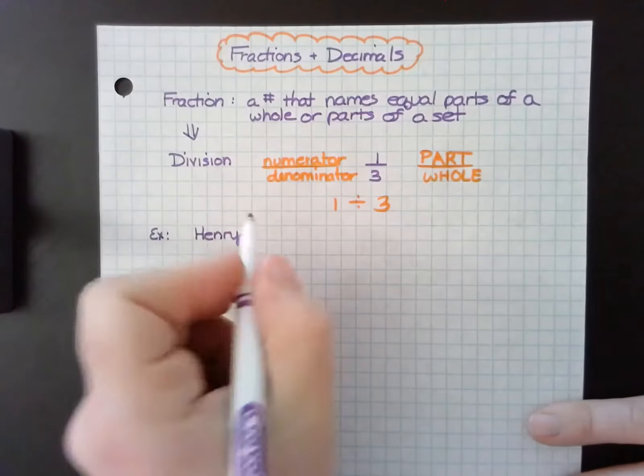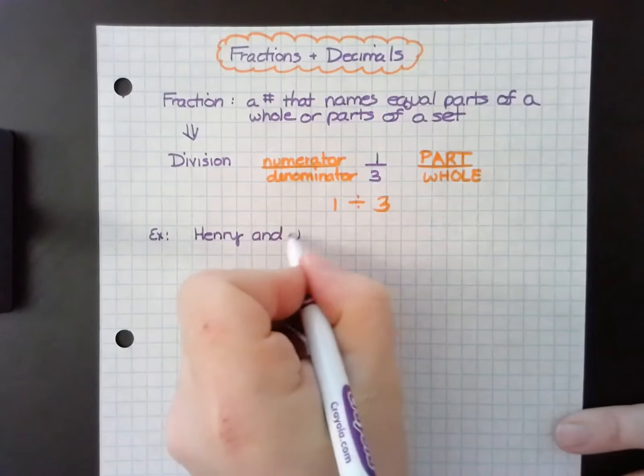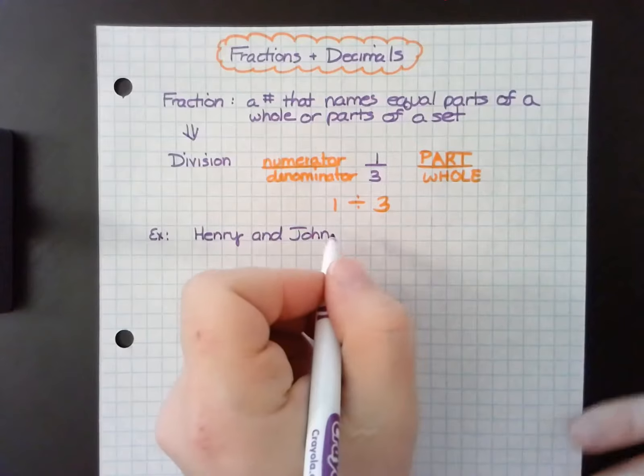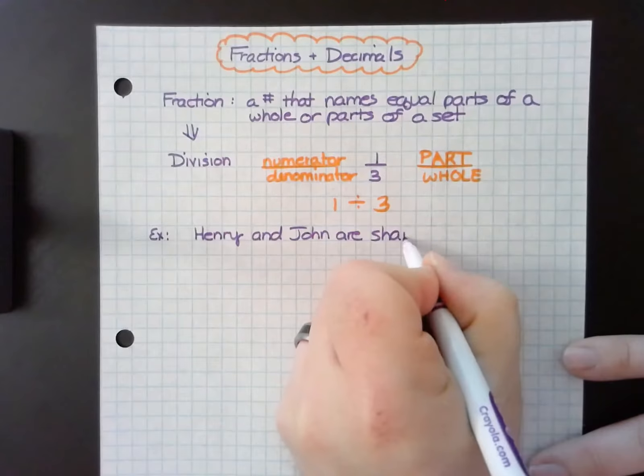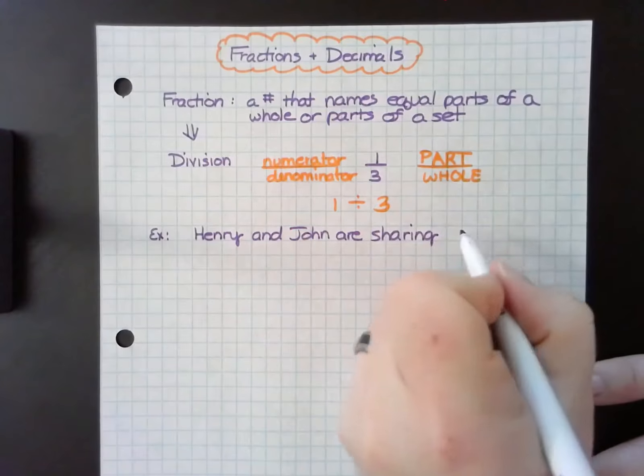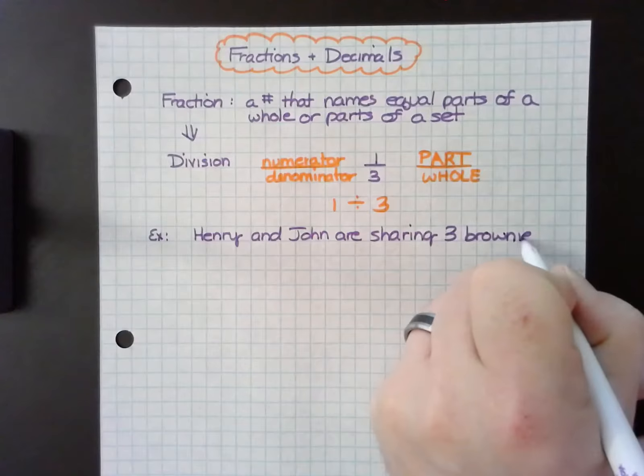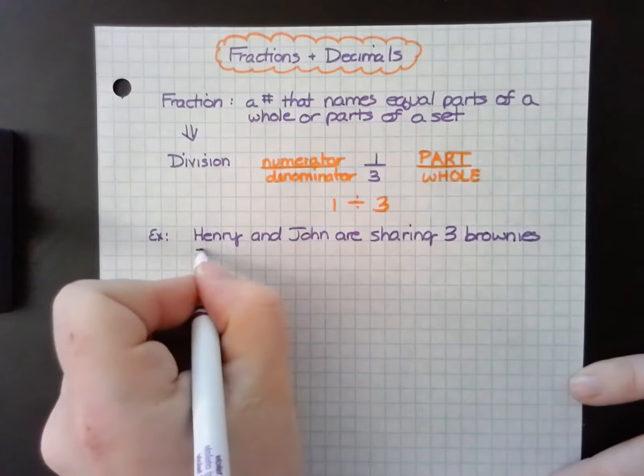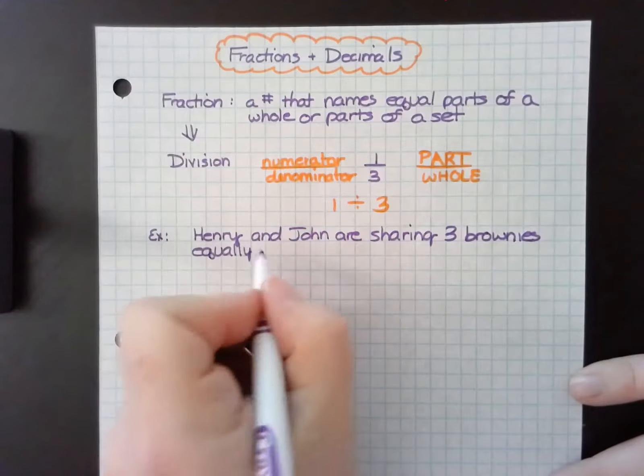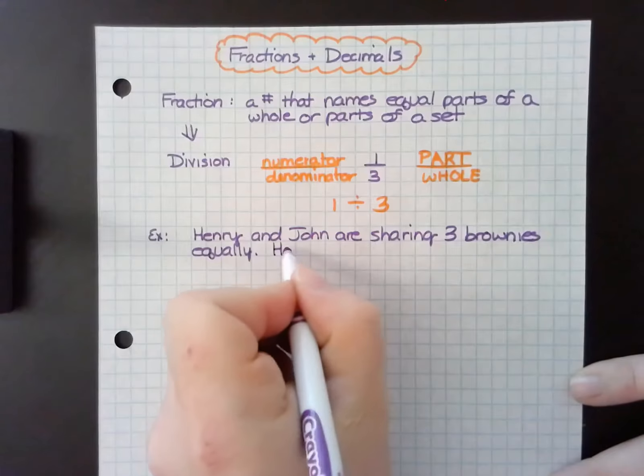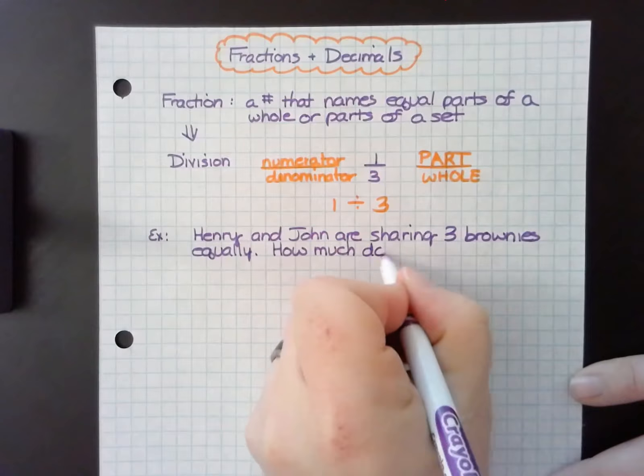Henry and John are sharing three brownies equally. How much does each person get?